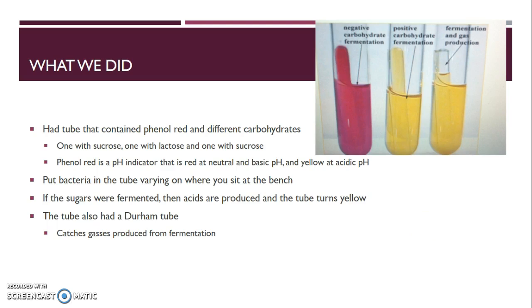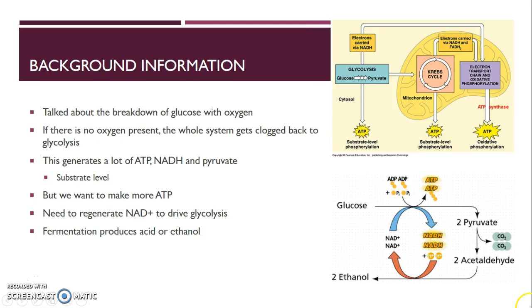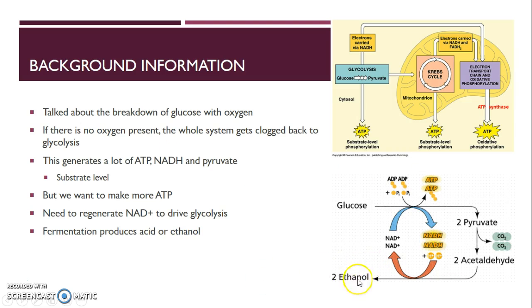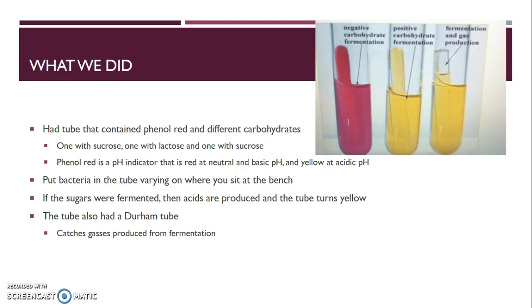One more important point: pyruvate can produce carbon dioxide — going through something like 2-acetaldehyde — so gases are sometimes produced from this process, which will be important. Also, the products of fermentation are typically acidic. Ethanol has some acidic characteristics because you reduced the compound, and when you reduce things, hydrogens are added and they can form an equilibrium. So it's typically acidic products that are produced.